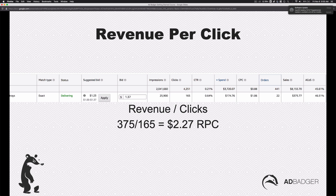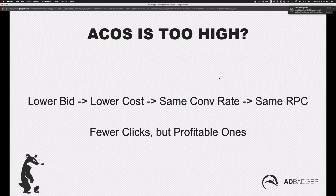Now revenue per click — in this case, I kept it inside Amazon for now, we're going to get to Ad Badger in the next video. But we generated $375 revenue from 165 clicks — that's $2.27 revenue per click. So if the ACOS is too high, we want to lower the bid and pay less. The keyword should have the same conversion rate whether you're paying $1 or $0.50 — it should have the same revenue per click. Fewer clicks, but profitable ones. So if you see something with 100% ACOS, work it down to $0.75, then $0.50, then $0.30 — do that slowly, and you're going to get less clicks and less sales, but they will land profitably.